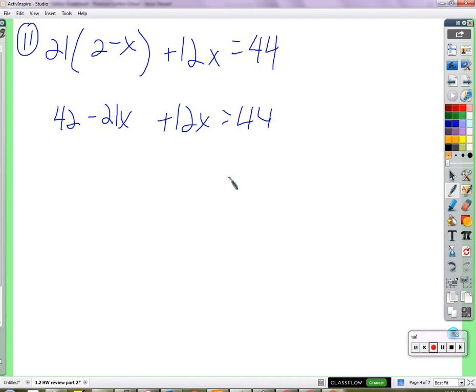Kayden? You, um, negative 21x plus 12x. Very good. You should give us negative. 9. 9x, 42, 44. Okay. I knew it was right there. Emma? You subtract 42 from both sides. Subtract 42. Negative 9x equals 2.